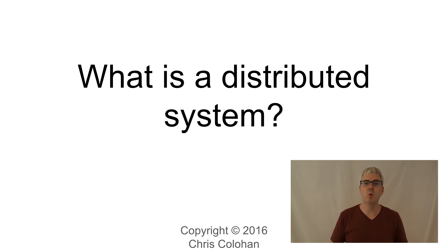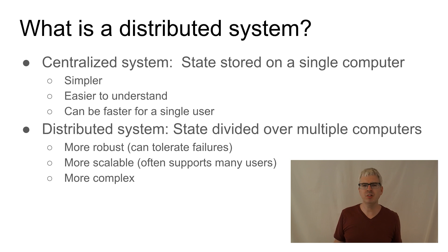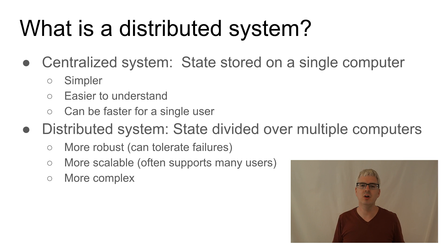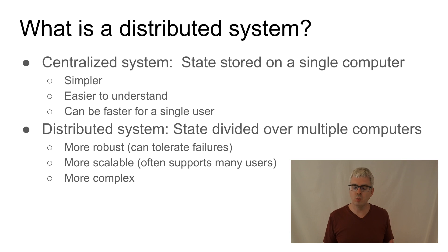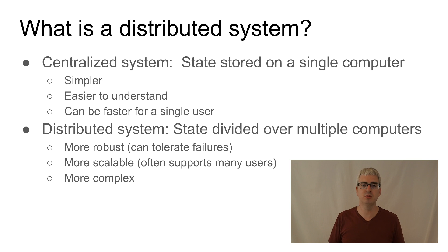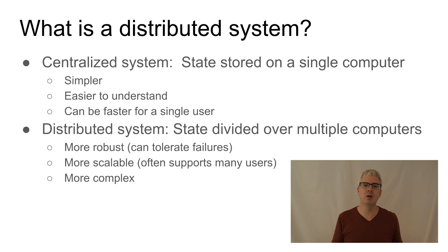So what is a distributed system and why should you care? A distributed system is not a centralized system. A centralized system is one where the state of your system and the program is stored on a single computer. For example, you might be taking notes on this video using Microsoft Word. Word will store the document in memory and periodically save your state to disk. If your computer breaks, you can't take notes anymore and you can't read your notes, unless you happen to have backups and can restore from them onto a new computer.